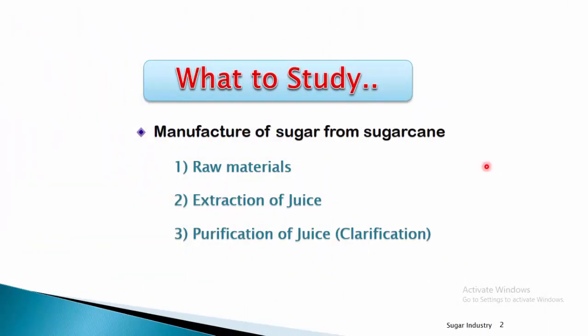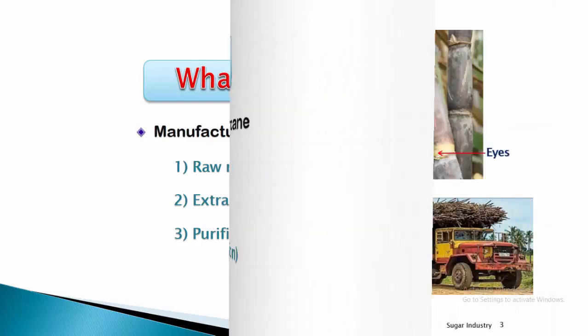In this lecture we are going to study the manufacture of sugar from sugar cane. It involves different steps such as: raw materials, extraction of juice, purification of juice, concentration and evaporation of juice, and finally drying and packing of sugar. Today we are going to cover three steps: raw materials, extraction of juice, and purification of juice, also known as clarification.